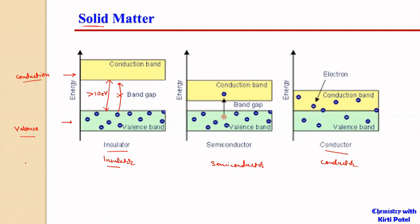For example, carbon has an atomic number of 6, so its electronic configuration will be 1s2, 2s2, 2p2. So here we have two valency electrons.